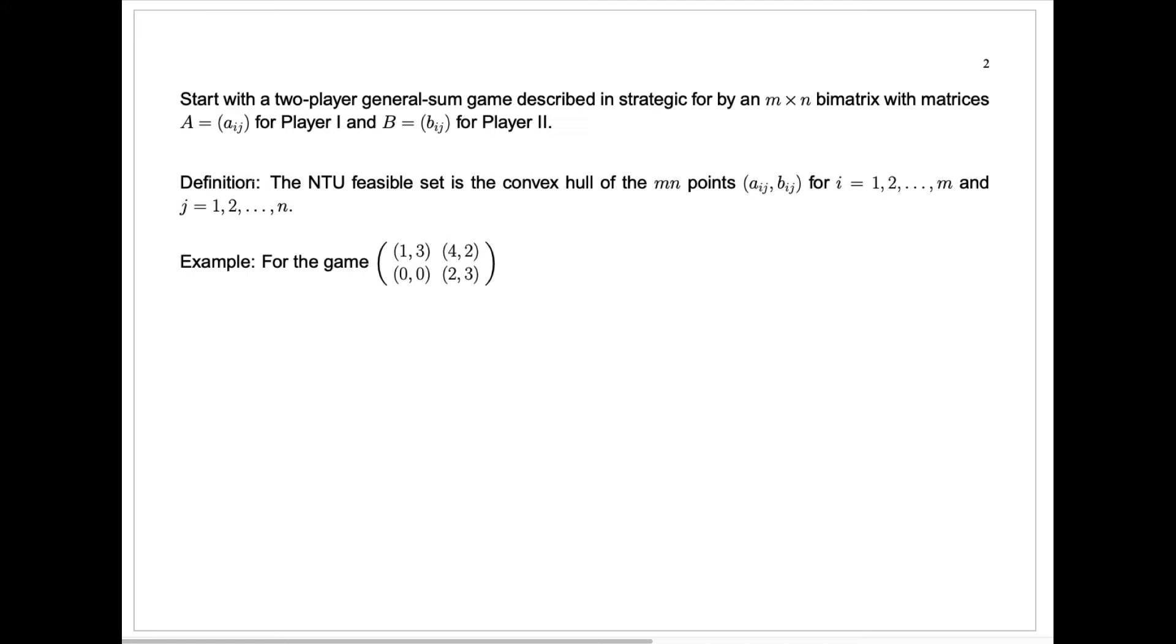So, let's start with the two-player general sum game. Here we're just talking about two-player games now, and it'll be described by an M by N bi-matrix, so it's a finite game. M is the number of strategy choices for player 1, N for player 2.